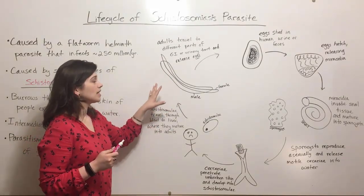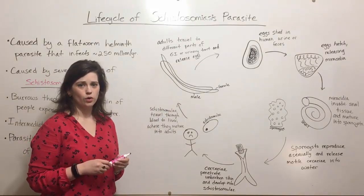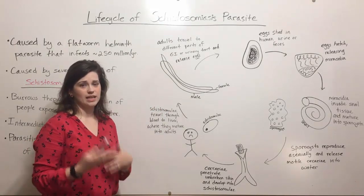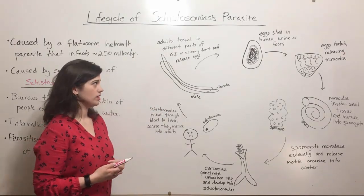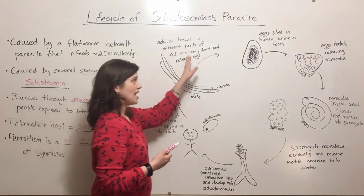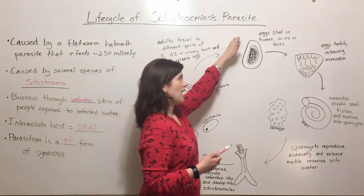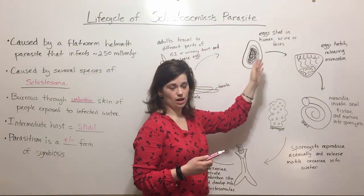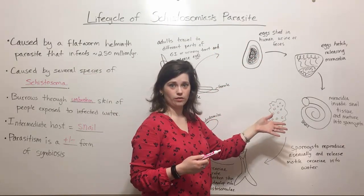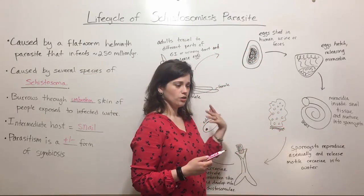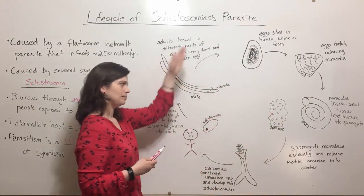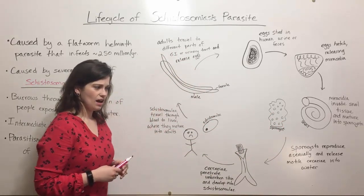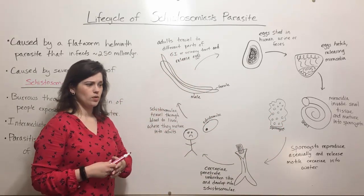These worms can live inside a host for upwards of 10 years, releasing eggs the entire time. Those eggs then get shed with human urine or feces through the excretory system, and the process continues.